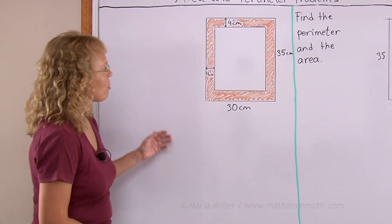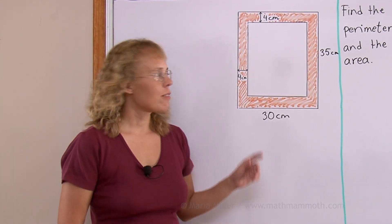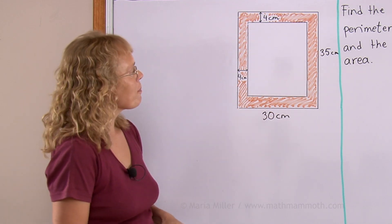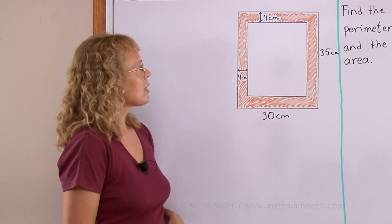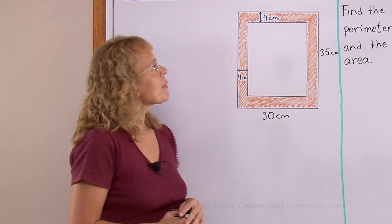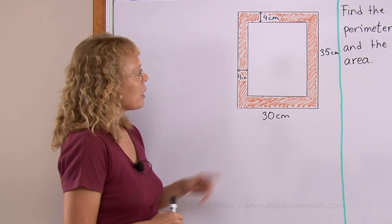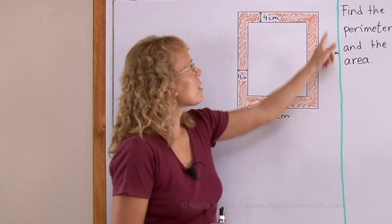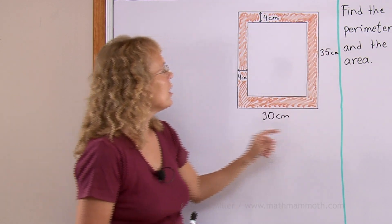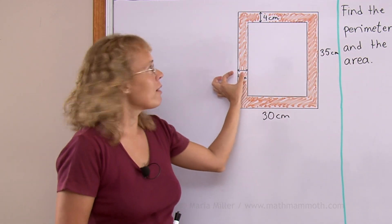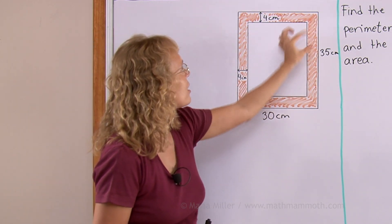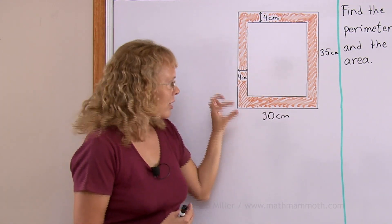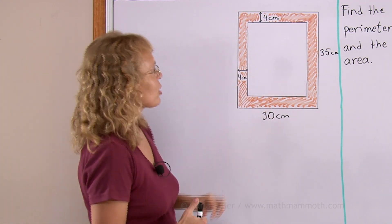The first problem is to find the area of this orange shaded area. It is like a picture frame and we are given that this side is 30 centimeters, this is 35, and the width of this frame everywhere is 4 centimeters. So what is the area of this actual frame?